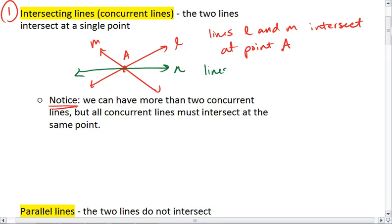We then know that lines L, M, and N are concurrent lines at point A.